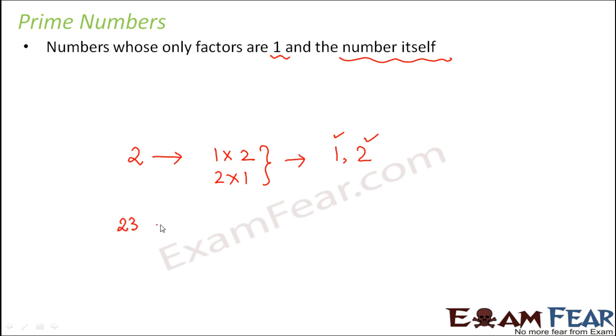Similarly, let us consider another number 23. So 23 can be written as 1 into 23, 23 into 1. You cannot write it in any other way. So that proves that it has only two factors, 1 and the number itself. Think of 5. 5 also has two factors, 1 and 5. And that is why 5 is also a prime number.